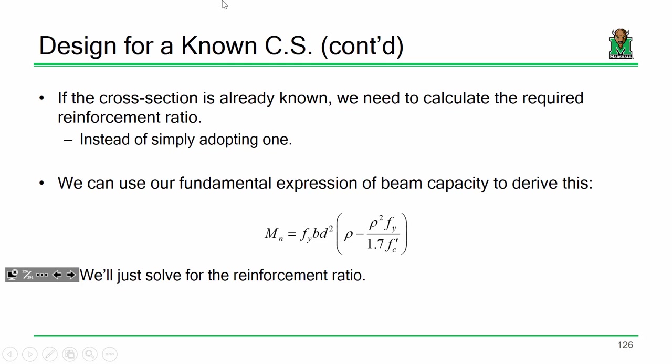But as you add rebar, the failure mechanism changes — it goes from a nice gradual yielding to a really sudden crushing. We graph that using a moment capacity expression that tells us the moment capacity of a reinforced concrete beam as a function of its dimensions, the material properties, and rho. So if we know everything but the reinforcement, all we have to do is solve for rho.